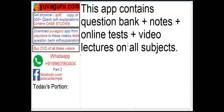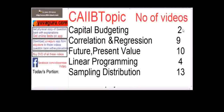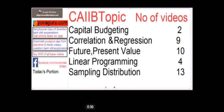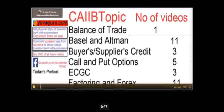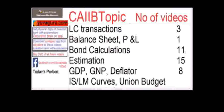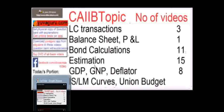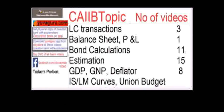For the main course, topics covered include: CIB, capital budgeting and correlation, future and present values, linear programming, sampling distribution, balance of trade, buyers credit, suppliers credit, call and put options, ECGC, factoring, LC transactions, balance sheets, P&L, bond calculations, estimation, GDP, GNP deflator, IS-LM curves, union budget, and Keynes' theory.